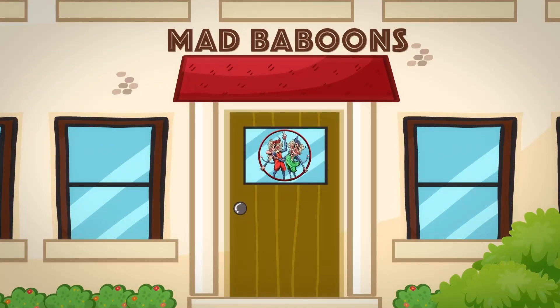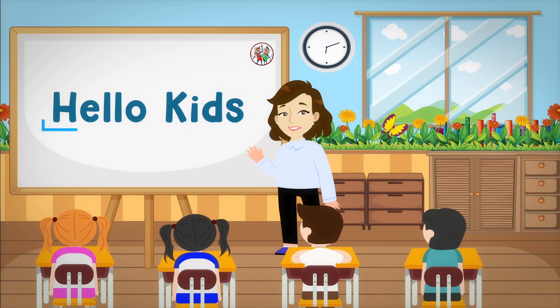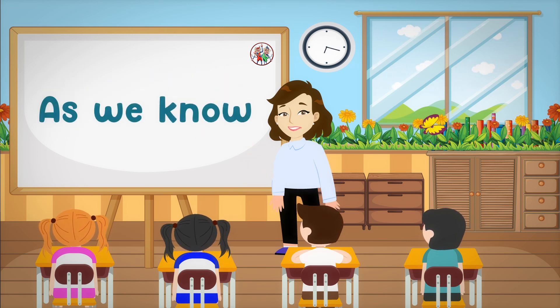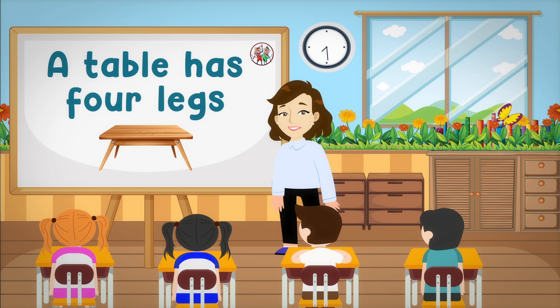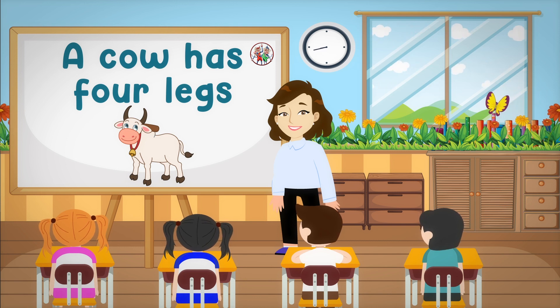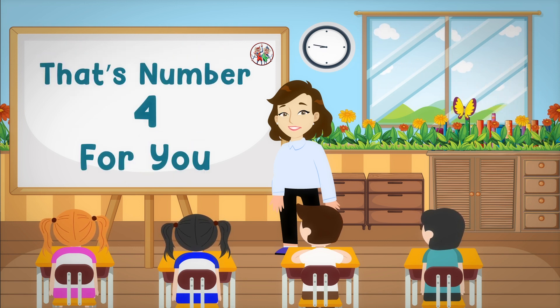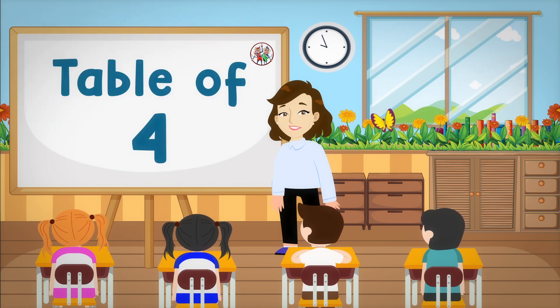Mad Baboons. Hello Kids! Welcome to Mad Baboons! As we know, a table has four legs and a cow has four legs. That's number four for you. Now let's learn the table of four.